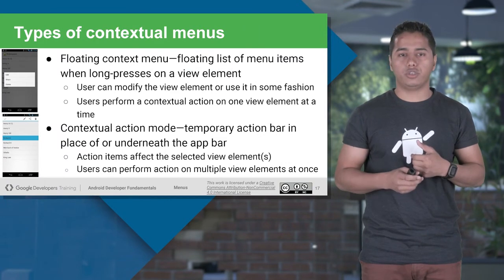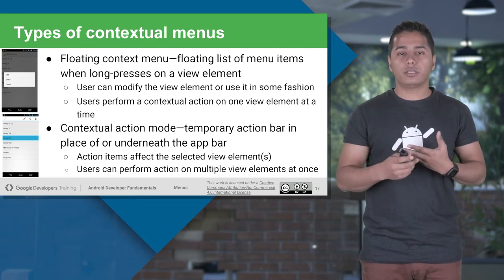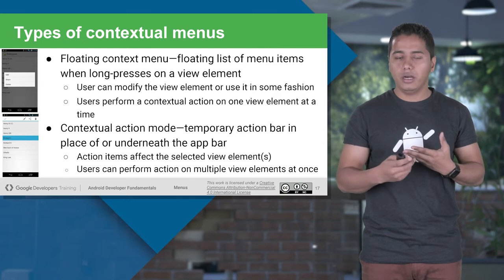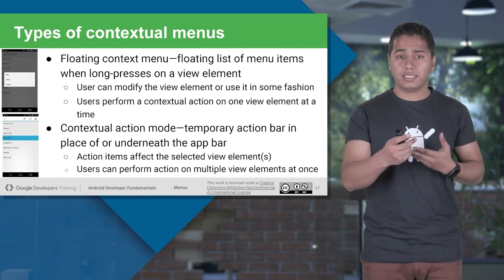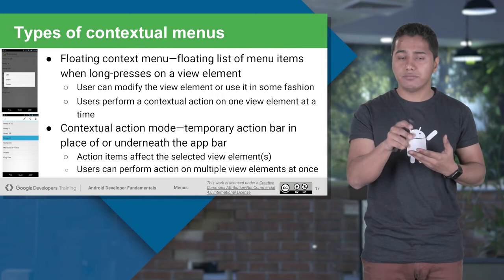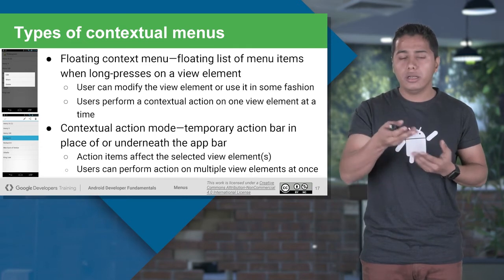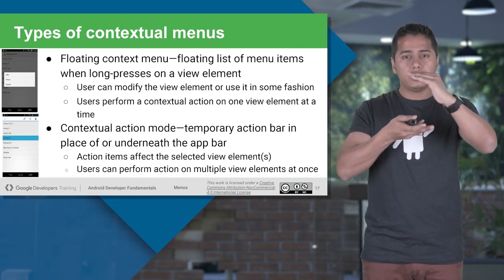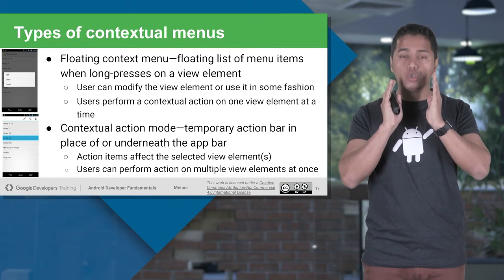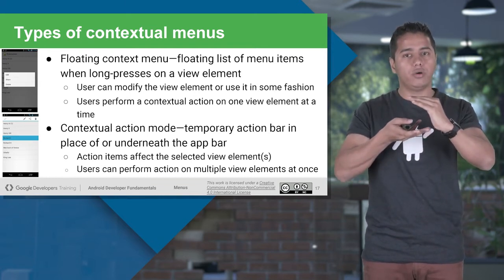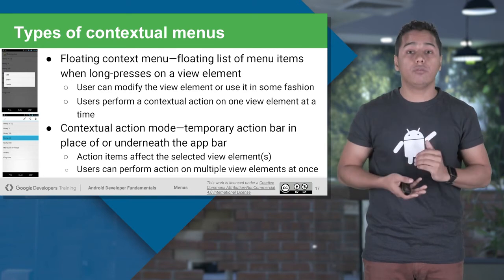There are basically two types of contextual menus. The first is floating context menu; the other is contextual action mode. In both cases, contextual menus are triggered when you long-click on the views. The floating contextual menu — you must have come across many times. For example, when you long-click on an EditText, it gives you a contextual menu like copy and paste. Or long-clicking on a ListView gives options like insert, delete, or delete chat, shown right on your screen floating over it. You can still see your activity behind that menu.